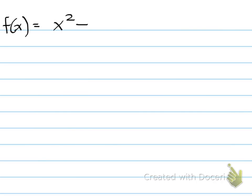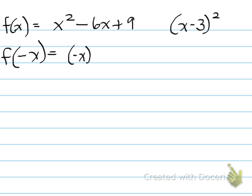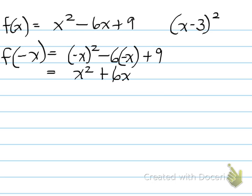One more example: f at x equals x squared minus 6x plus 9, which we also know factors as x minus 3 all squared. We test for even by plugging in f at negative x. When we substitute and simplify, we end up with x squared plus 6x plus 9. Does that equal f at x? No, it doesn't, so it's not even.